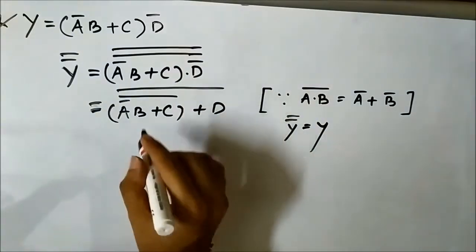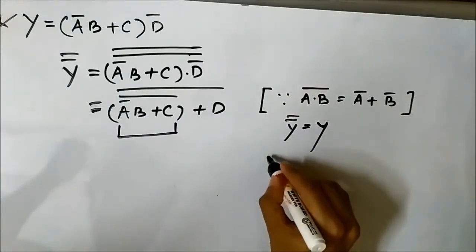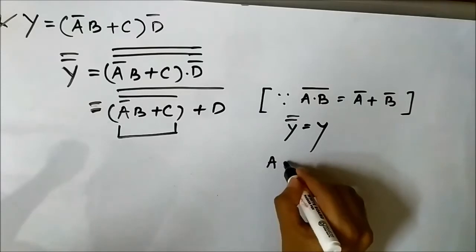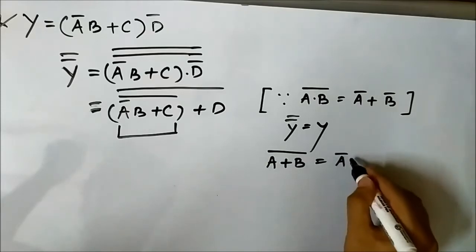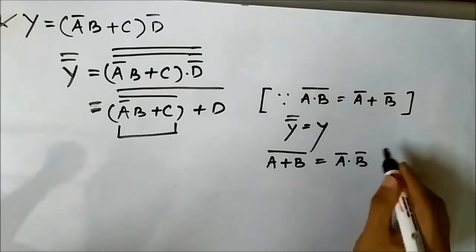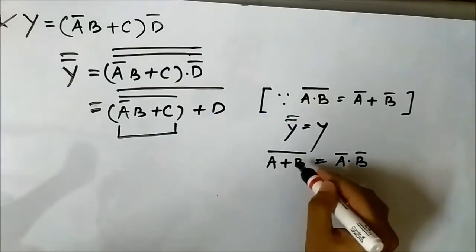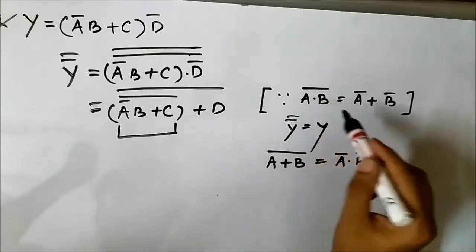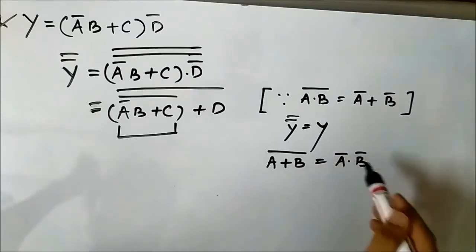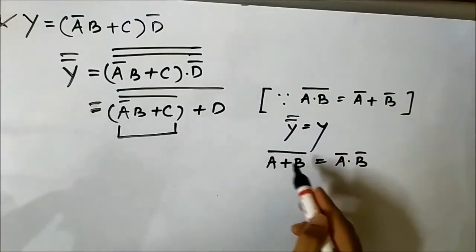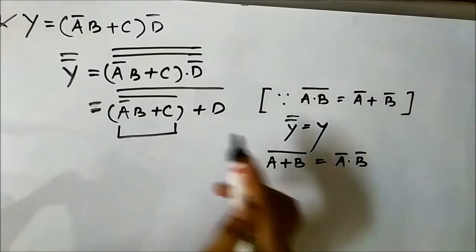Now pay attention to this part. Here we will apply De Morgan's law: A or B whole complement equals A complement and B complement. Do not confuse the A and B here with the A and B in our expression — they are different; I am just stating the De Morgan law. This is the first De Morgan law which converts AND into OR. This is the second De Morgan law which converts OR into AND form. Here, A or B whole complement can be written as A complement and B complement.